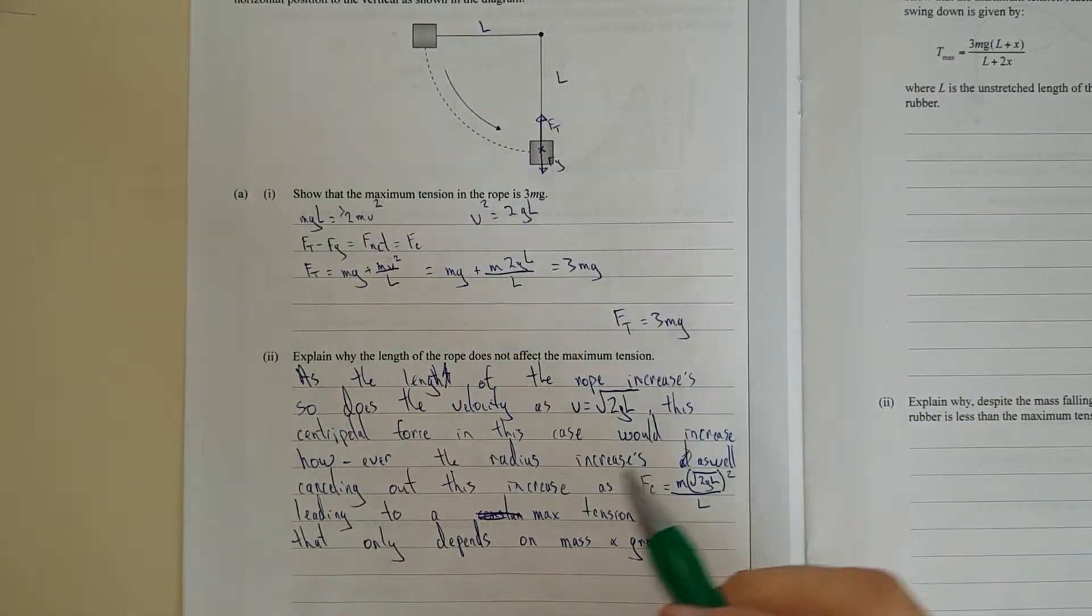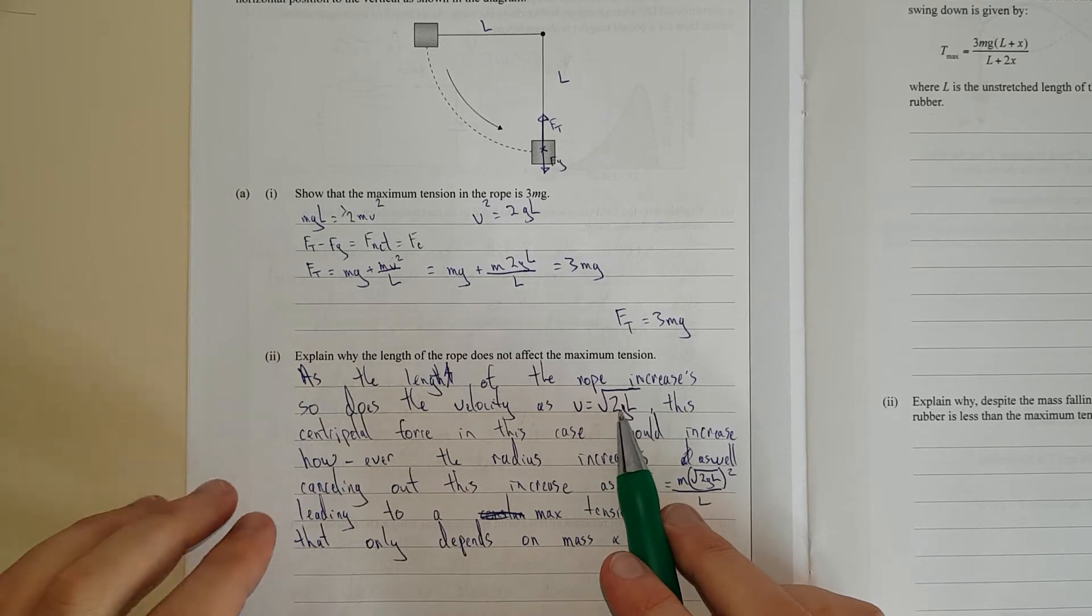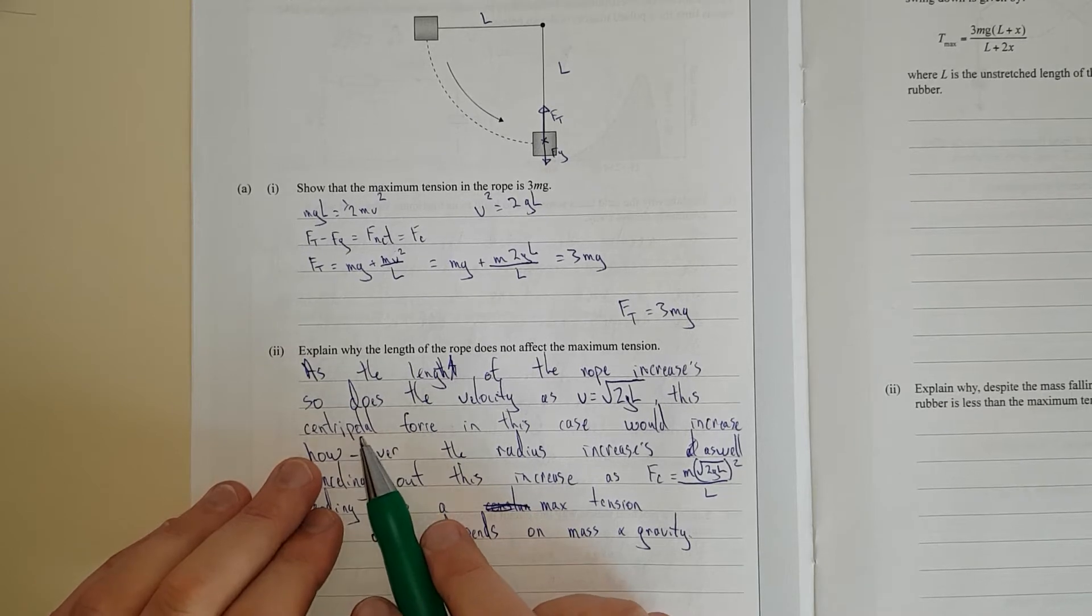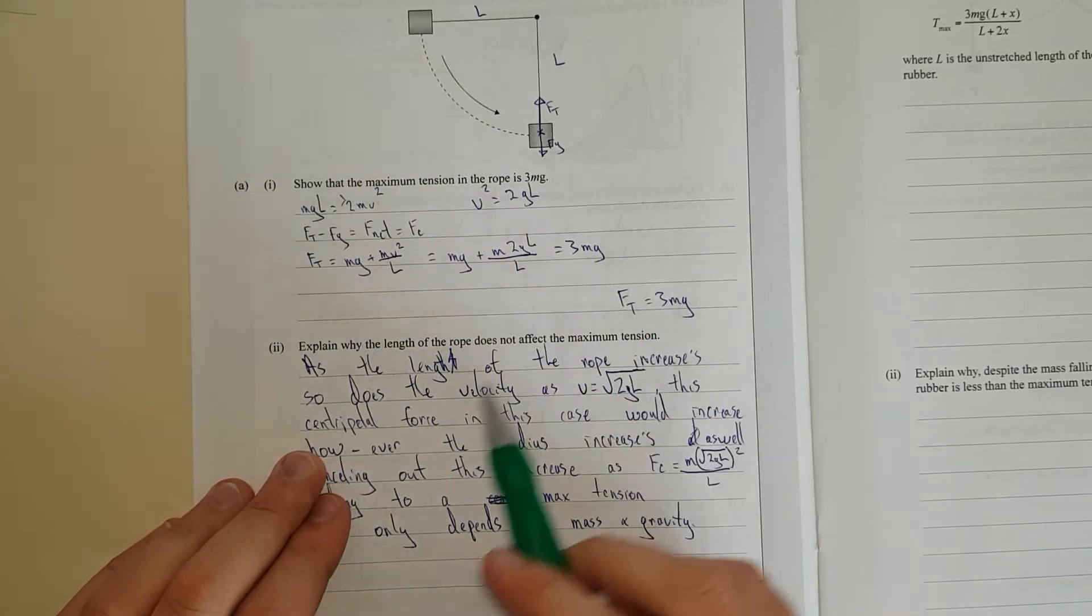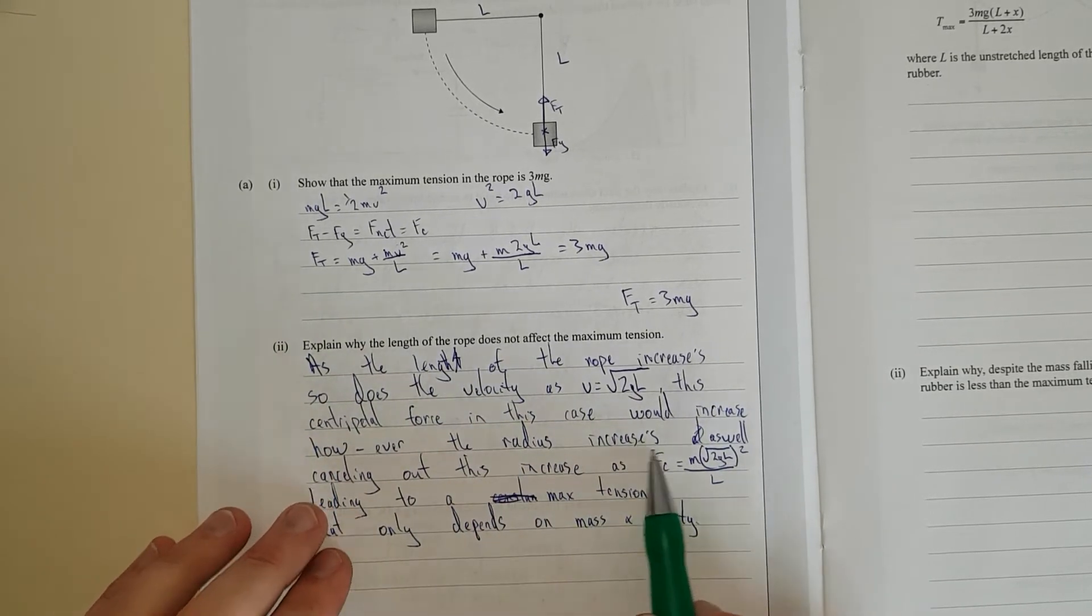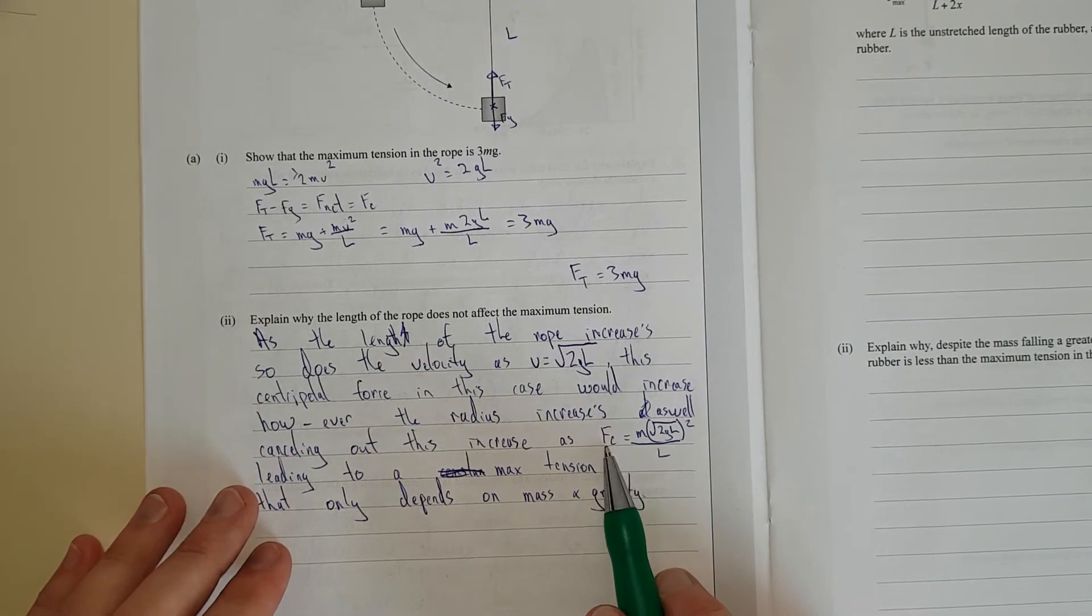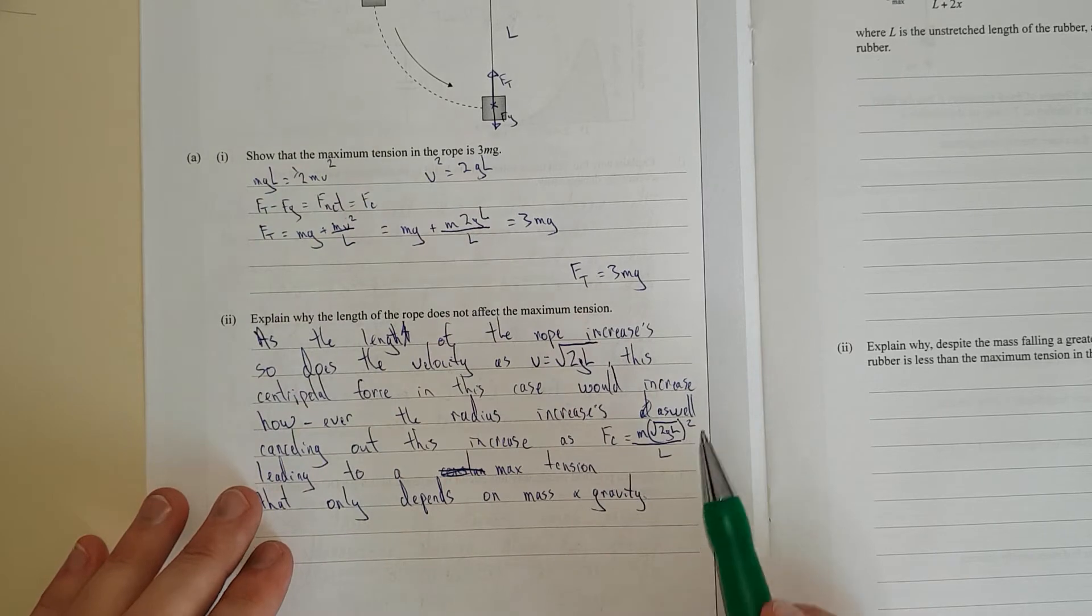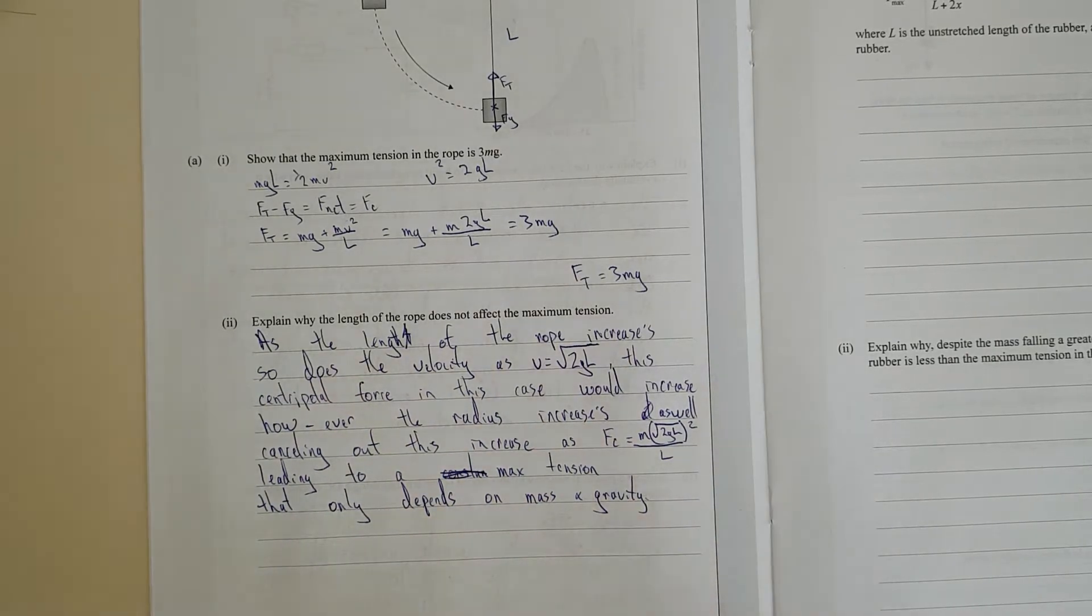So, it's a bit messy, but as the length of the rope increases, so does the velocity, as v equals square root 2gl. This centripetal force in this case would increase, however the radius increases as well because we're talking about increasing length, cancelling out this increase. Fc equals mass times velocity squared, substituted in 2gl squared divided by L, leading to max tension that only depends on mass and gravity.